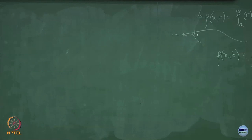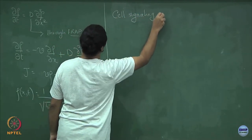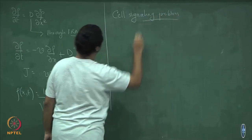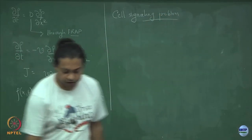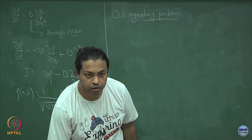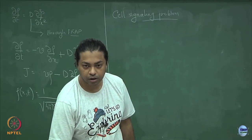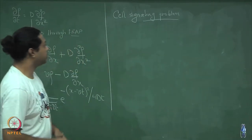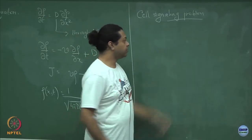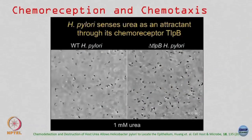Let us come to the problem I want to discuss today: the cell signaling problem. To remind you, we have some chemical which the cell is going to sense. If it is an attractant, the cell will try to move towards it; if it is a repellent, it will try to move away.